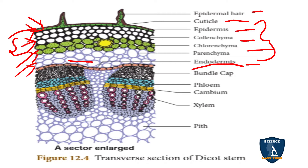You can see a bundle cap here. The pericycle is not continuous — unlike in dicot or monocot root, it is discontinuous. This portion is the pericycle, made up of sclerenchyma cells. It looks like a cap placed on top of the vascular bundle, so it is called the bundle cap, also known as hard bast.